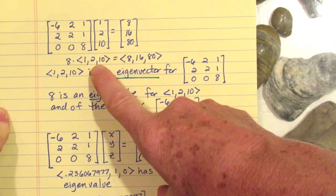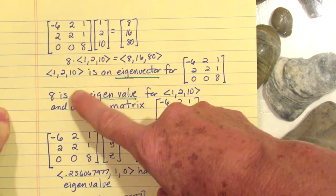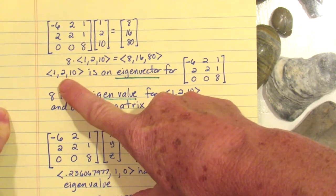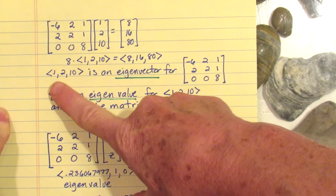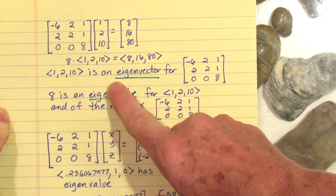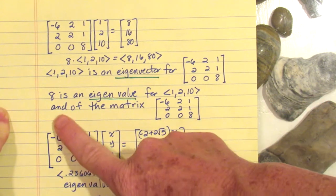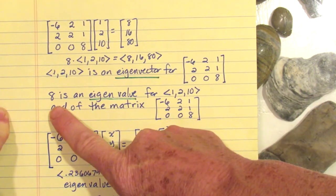But notice [8,16,80] is a constant multiple of [1,2,10]. In fact, it's 8 times [1,2,10]. Because we get a constant multiple of [1,2,10], we say that the vector [1,2,10] is an eigenvector for this three by three matrix, and 8 is its eigenvalue.